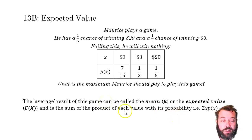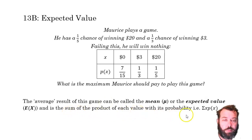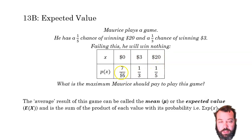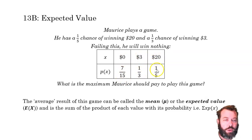We calculate it like this: it is the sum of the product of each value with its probability. So: 0 times 7/15, plus 3 times 1/3, plus 20 times 1/5. Zero times anything is 0; 3 times 1/3 is 1; 20 times 1/5 is 4. So we add those together: 0 plus 1 plus 4 equals $5.